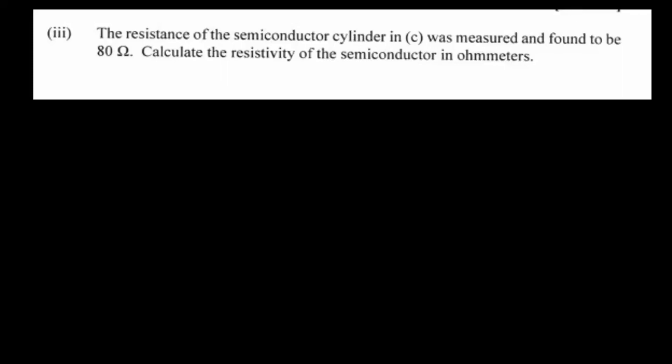Now let's tackle the next part. It says the resistance of the semiconductor cylinder in part (c) was measured and found to be 880 ohms — calculate the resistivity of the semiconductor in ohm-metres. These questions tend to tie different concepts together: drift velocity, resistivity, and AC — quite a compact question. We know the resistance is 880 ohms and the thing is a cylinder.